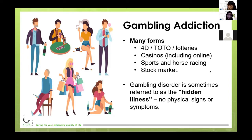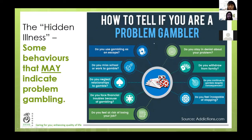Gambling disorder is sometimes referred to as a hidden illness because you cannot see any physical signs or symptoms. Normally they don't appear ill and don't have the kind of physical withdrawal symptoms. But you do see them needing to go back to the gambling behaviour quite frequently. So how do you tell if a person is potentially a problem gambler? These behaviours are not exhaustive, and if a person has these behaviours it doesn't necessarily mean they are a gambling addict — we are not doing a diagnosis today. But these are some signs and symptoms that a person may be a problem gambler.